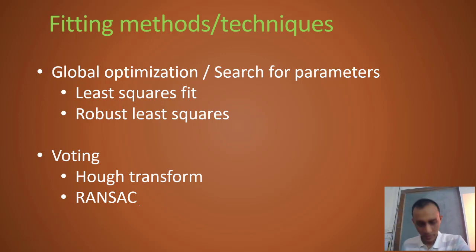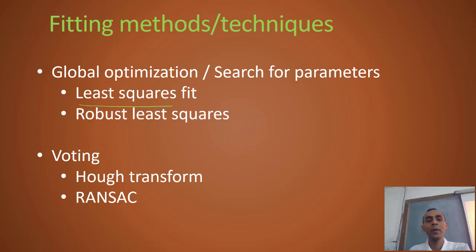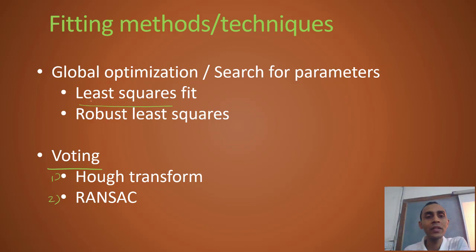First we'll see some simple mathematical methods of global optimization using the least squares fitting method to set the background, and then we'll discuss two famous algorithms based on a voting procedure: the Hough transform and RANSAC. These are most often used to solve these problems - we'll see why and what their pros and cons are. We start with the simple solution of least squares fitting.